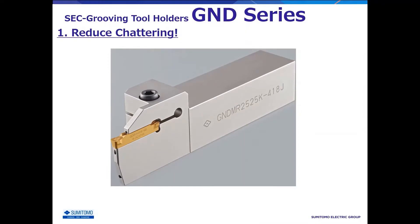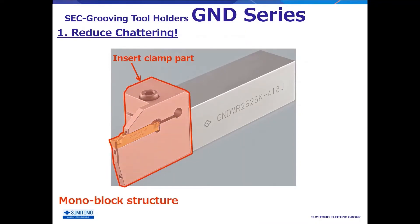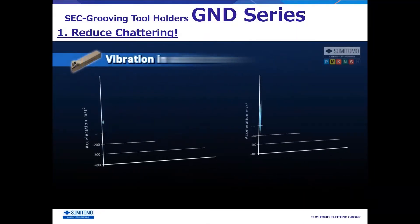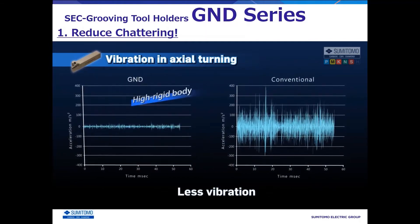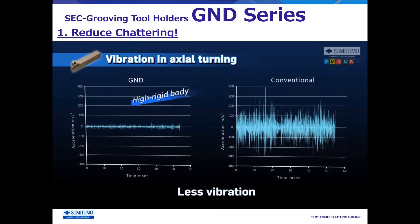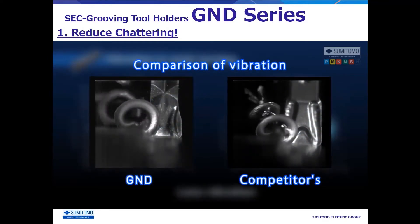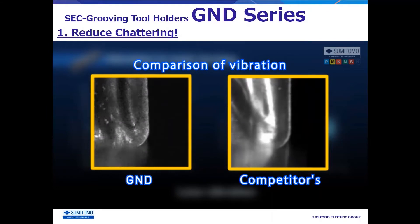GND holders have simple and rigid structures since the insert clamp system is monoblocked. In addition, die steel, which has a high Young's modulus and is hard to bend, is used as the material for the holder, so that rigidity is further improved. As you can see, GND can greatly inhibit vibrations compared to competitor's tools. Looking at the cutting edge, it can be seen that the cutting edge position of GND is very stable during machining.